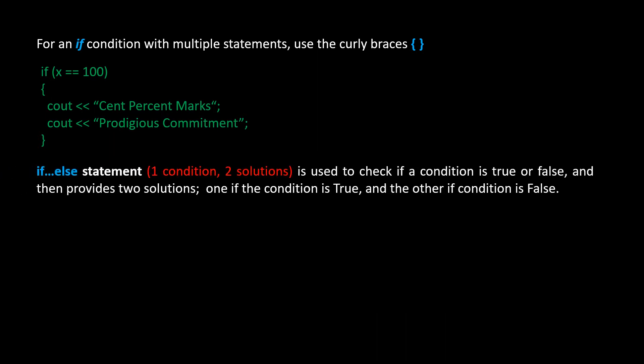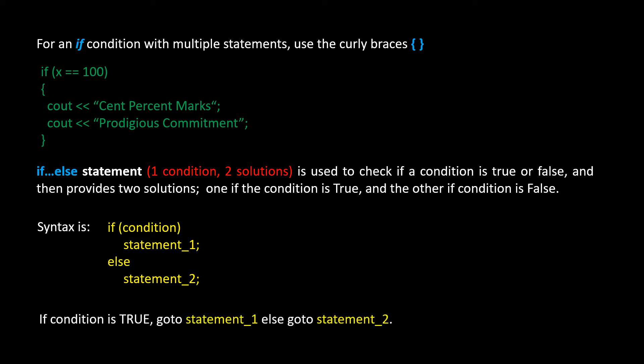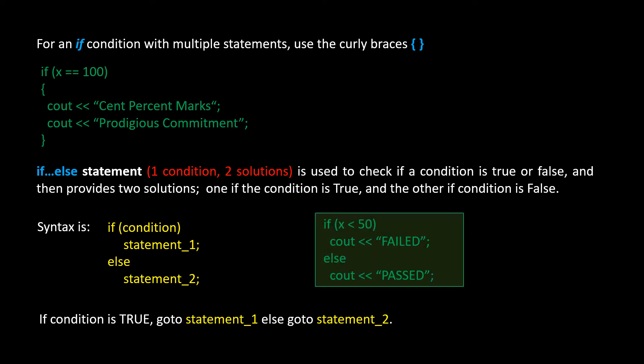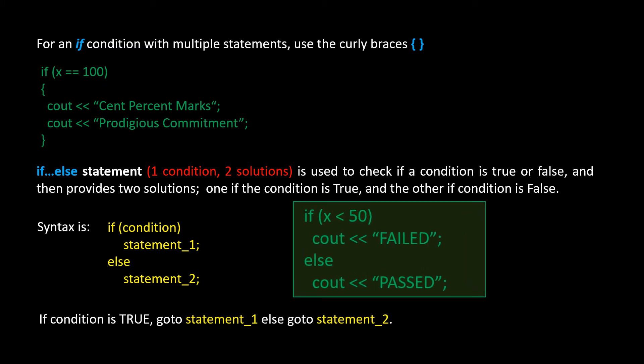The if-else statement is a one-condition, two-solution statement that is used to check if a condition is true or false, and then provides two solutions: one if the condition is true, and the other if the condition is false. The syntax is: if (condition) statement one; else statement two. This is an example where we have one condition — if x is less than 50, then cout 'failed'; else cout 'passed'. So here we have one condition and two solutions.